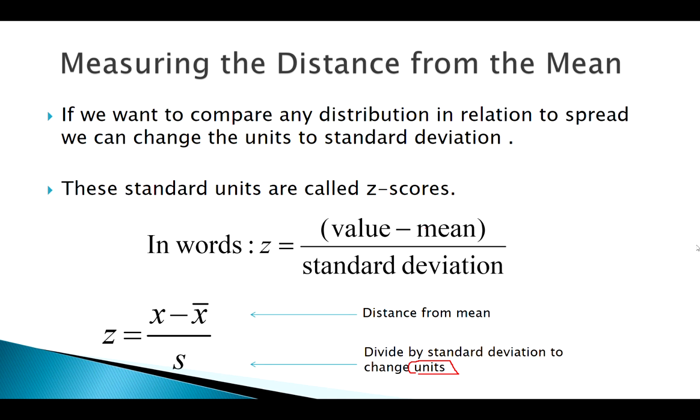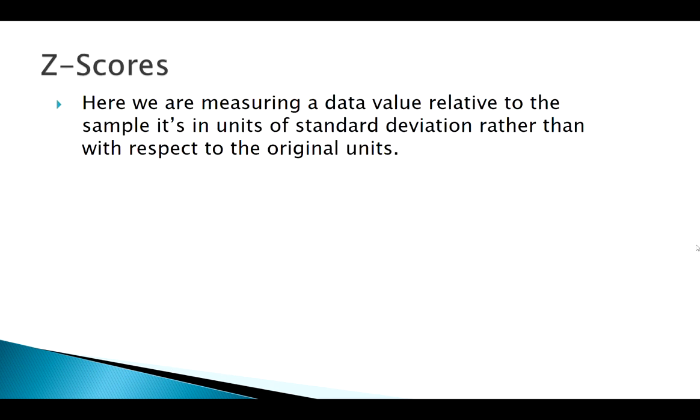Z-scores can be useful to make comparisons between groups of different units or that have different natures. Z-scores could be anything from negative infinity to infinity, but a z-score of zero would mean you're right at the mean. We mentioned that anything outside of two standard deviations is pretty unusual, so anything outside of plus or minus a z-score of plus or minus two we can call unusual.